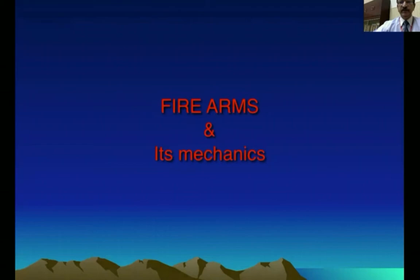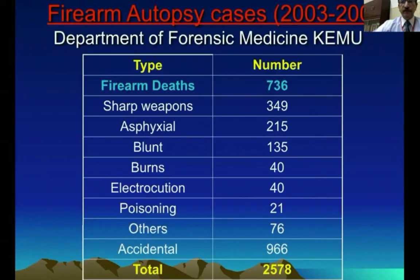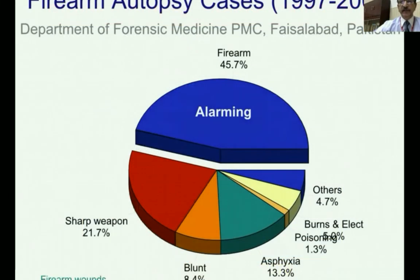We are now going to discuss firearms and their mechanics. A study was carried out in King Edward Medical University from 2003 to 2008, and amongst 2,578 cases it was found that the firearm was the leading homicidal cause of death. Another study in Faisalabad at Punjab Medical College from 1997 to 2003 also found that more than 45% of homicidal deaths were caused by firearms.